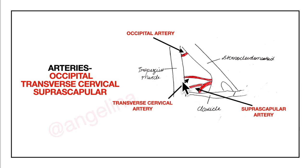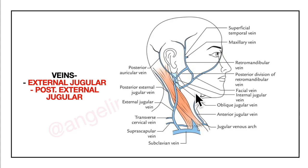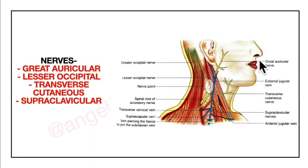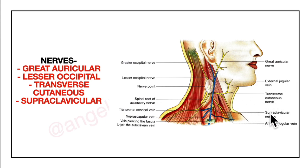This is the trapezius muscle and this is the sternocleidomastoid muscle. Looking at the veins, we have the external jugular vein and the posterior external jugular vein. Looking at the nerves, there are parts of the greater auricular nerve, the lesser occipital nerve, the transverse cutaneous nerve, and the supraclavicular nerves.